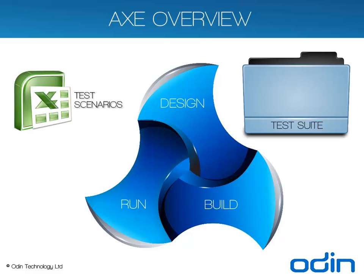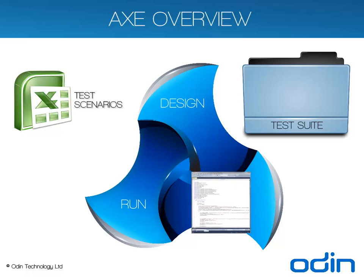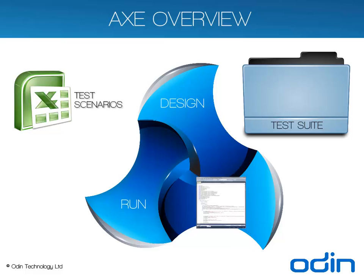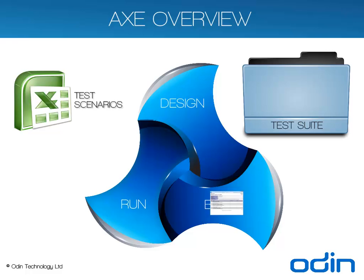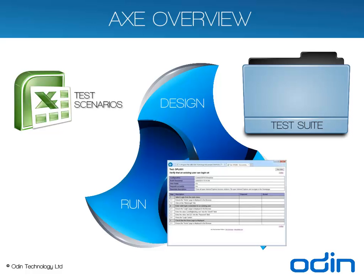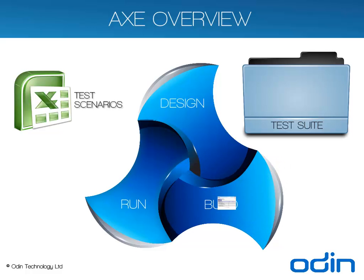During the Build phase, AXE uses a technique called Code Generation to generate executable scripts for test automation tools in the programming language that they use, for example, C-sharp. At the same time, AXE uses a technique called Documentation Generation to create natural language documentation which is traditionally used during manual testing.